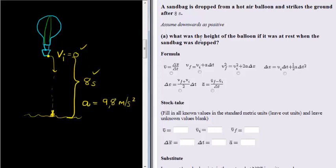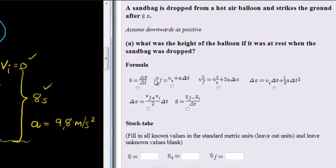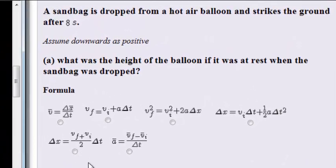Now with that in mind, let's work out the height, in other words the displacement of the bag. That's how high the balloon would have been when it dropped. So the formula that contains initial velocity, delta T, as well as acceleration, as well as a change in displacement is this one.